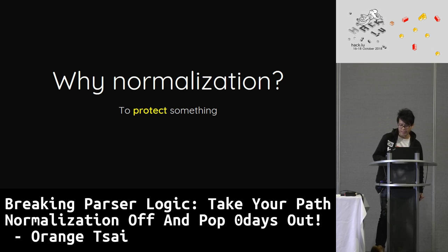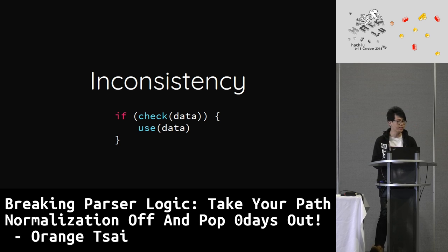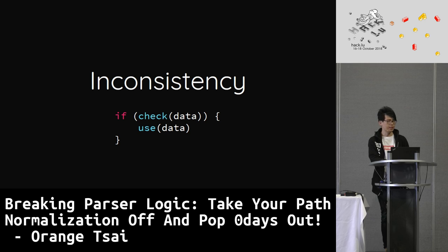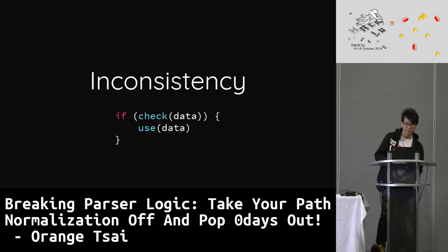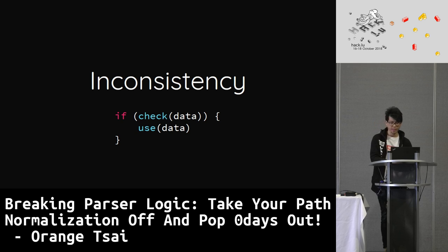So what's wrong with normalization? Yes — inconsistency. This is a typical dangerous pattern and easy to find problems on. The behavior in 'check' must be the same as the behavior in 'use.' Otherwise, the check function will be bypassed. It's just like my SSRF talk at Black Hat last year — finding inconsistency between URL parsers and URL features, which led to whole SSRF bypasses. So for the past two years, I paid more attention on the bug of inconsistency.